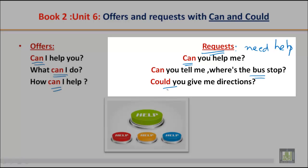Could you give me directions? Now, what's the difference between 'can' and 'could'? 'Could' is more polite than 'can'. So: 'Could you give me directions?' or 'Can you tell me where the bus stop is?' In a request, you need help and ask for it. In an offer, you try to give help.